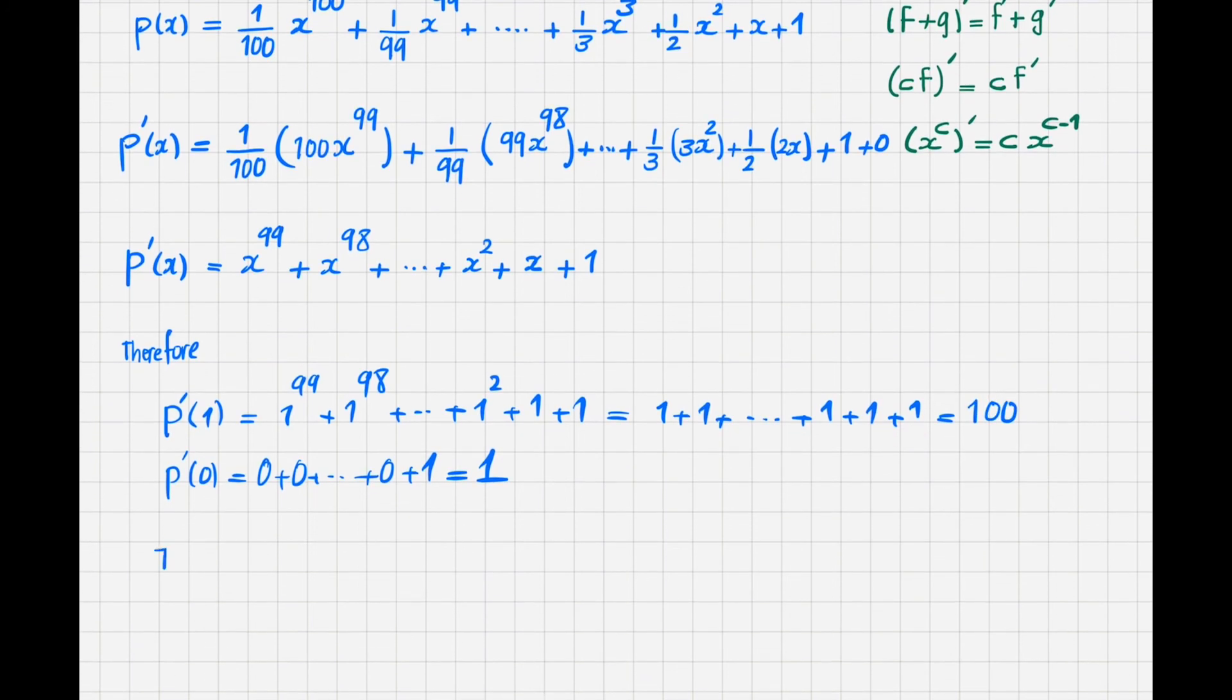Therefore, p prime of 1 divided by p prime of 0. Instead of p prime of 1, I put 100. Instead of p prime of 0, I put 1. And it is clear when I divide these two numbers, it becomes 100 as I have written in the answer. So the answer is 100.